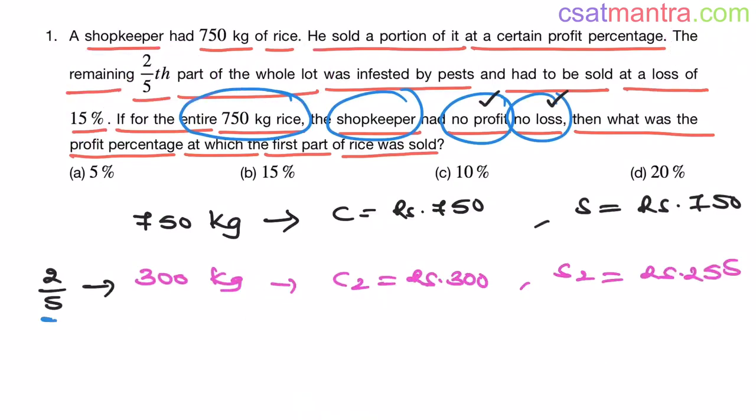Now, see two-fifth part that is 300 kg. Cost price is 300 rupees. Selling price is 255 rupees. Selling price is less than cost price. That's why there is a loss.